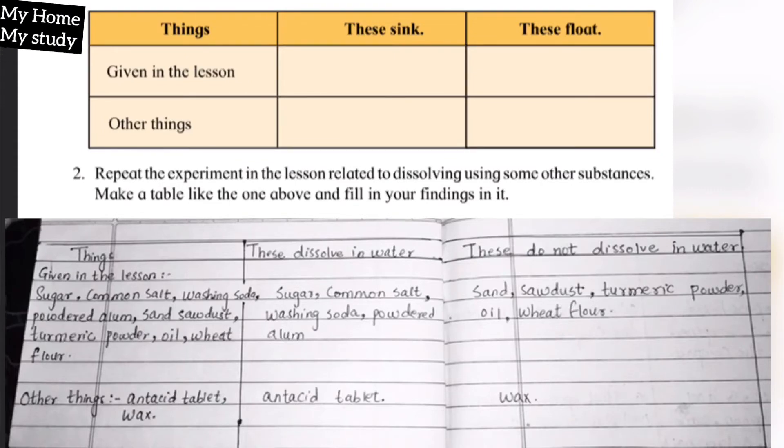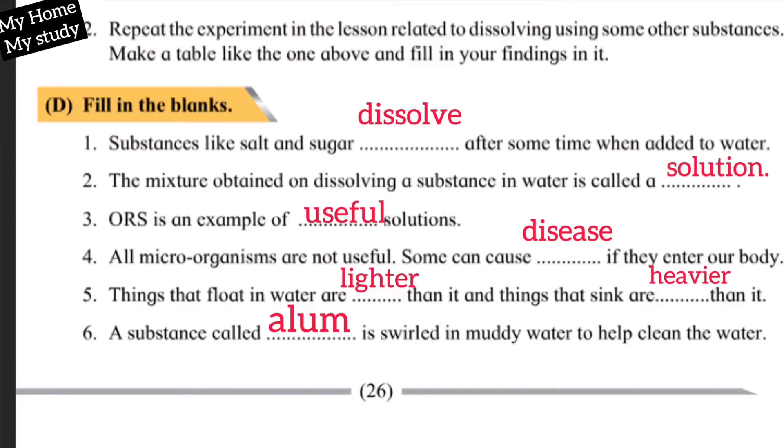Next one: Fill in the blanks. Substances like salt and sugar dissolve after some time when added to water. Second, the mixture obtained on dissolving a substance in water is called a solution. Third, ORS is an example of useful solution. Fourth, all microorganisms are not useful. Some can cause disease if they enter our body. Fifth, things that float in water are lighter than it and things that sink are heavier than it. A substance called alum is swirled in muddy water to help clean the water. Alum or fitkari is used to clean water.